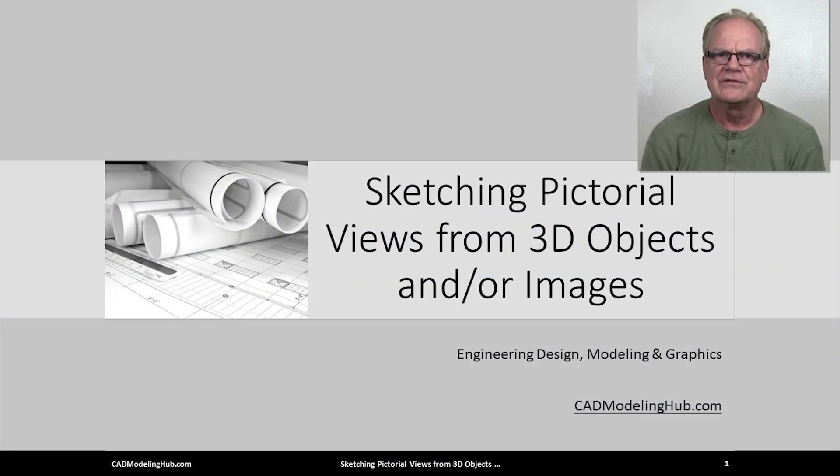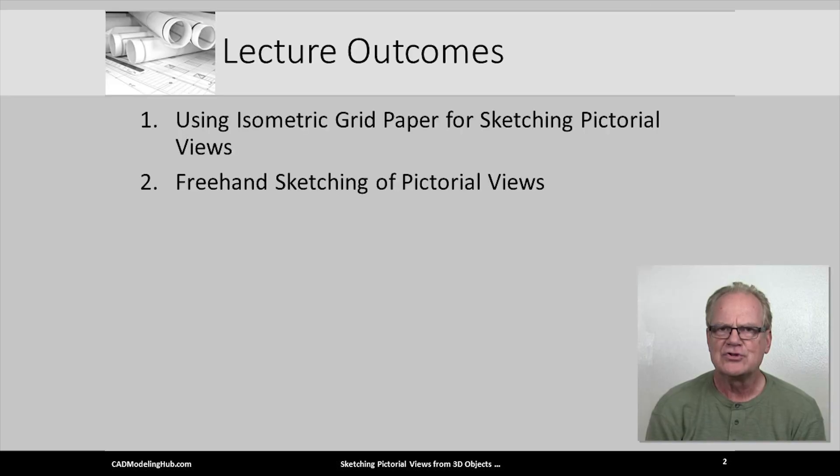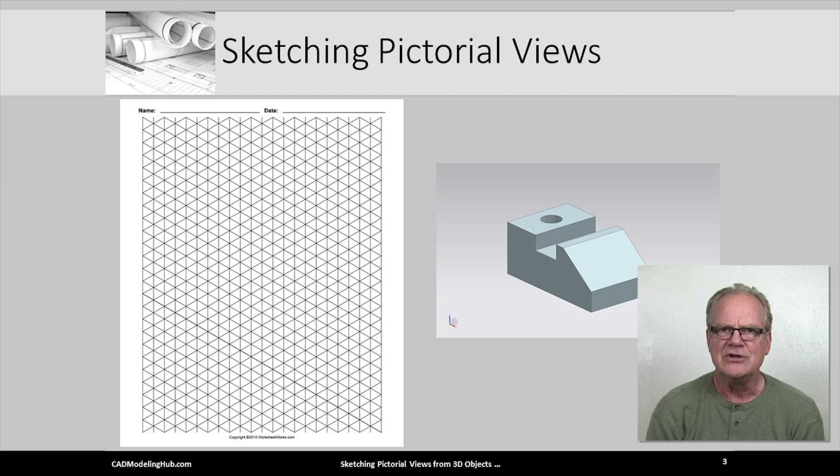This lecture will focus on sketching pictorial views from 3D objects and/or images. I will show how to use isometric grid or graph paper, as well as discuss techniques and methods for freehand sketching of pictorial views. On the left is an image of isometric graph paper. You can find this free online and simply send it to your printer.